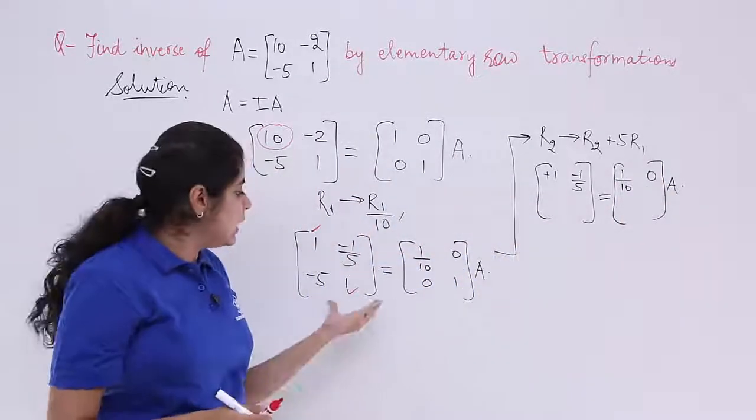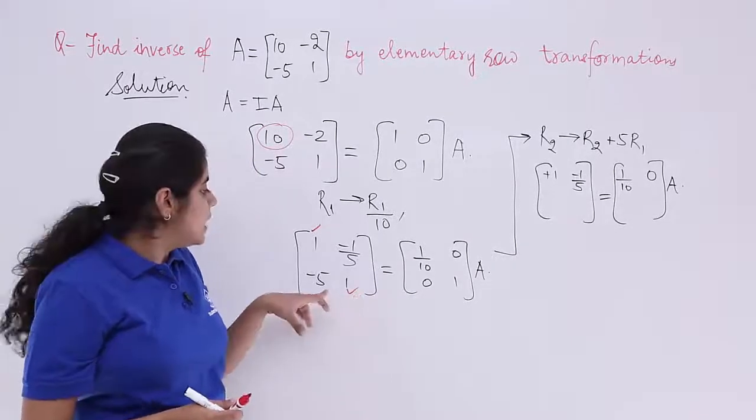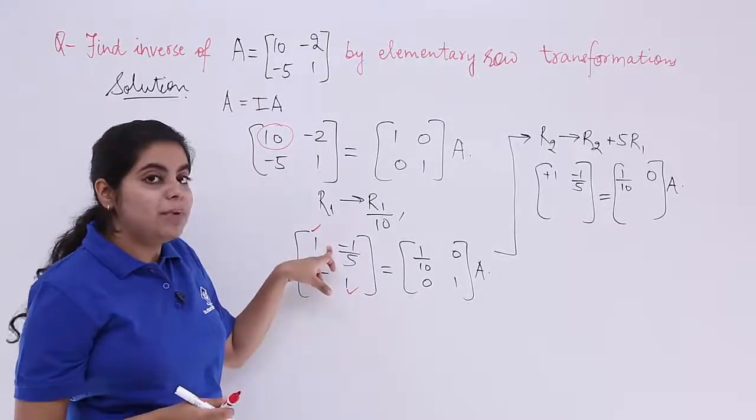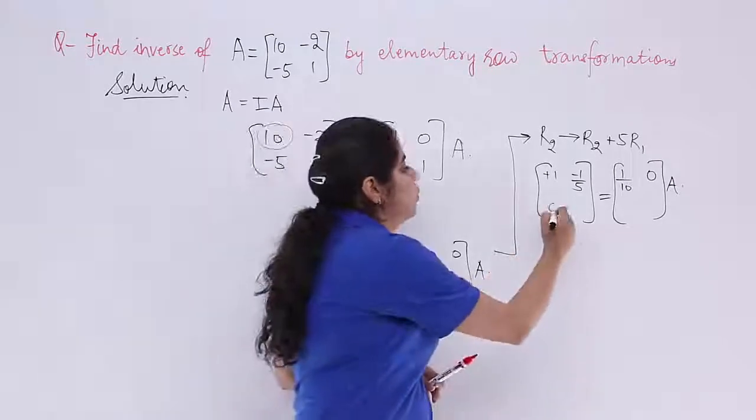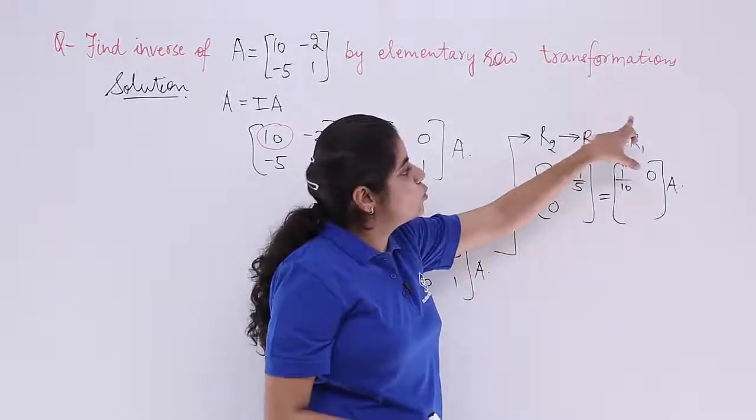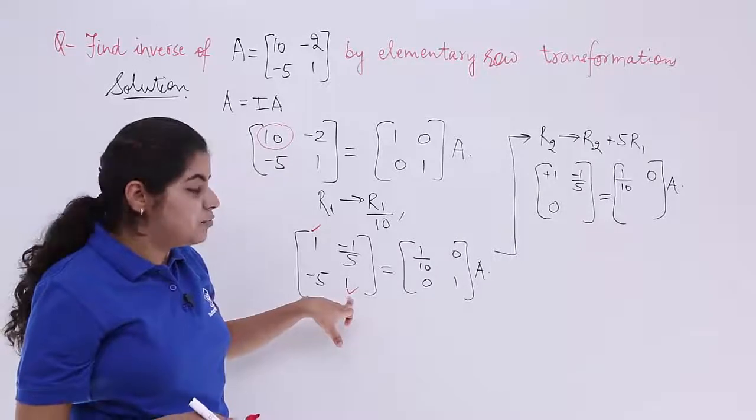What happens in the next case? The next case is of the R2. It is minus 5 plus 5 which becomes 0. Why minus 5 plus 5? Because R2 plus 5 R1.